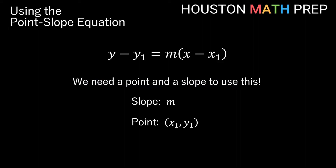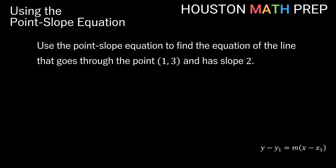You'll need a point and a slope to use the point-slope equation. So our point will be some x1 comma y1. Our slope will be m. You'll plug those three numbers into this equation and you'll be able to get an equation for the line that looks like y equals mx plus b. We'll go ahead and work through a few with you.